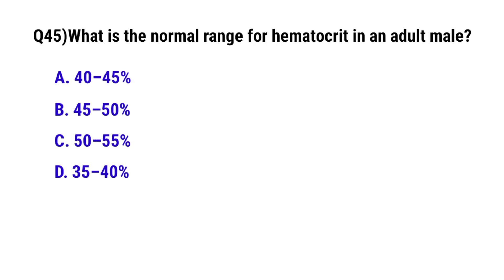Question number 45: What is the normal range of hematocrit in adult males? The correct option is B: 45 to 50 percent.